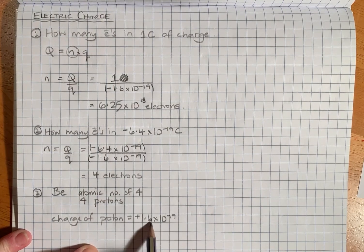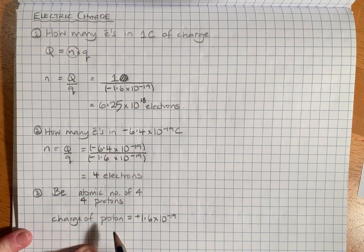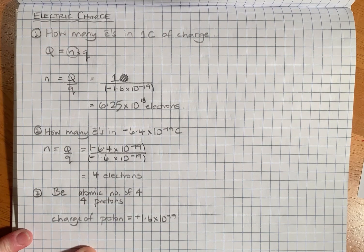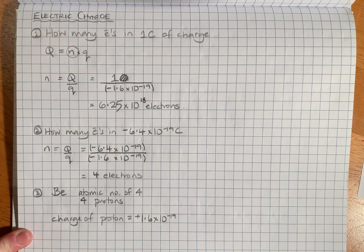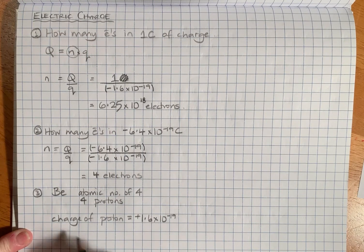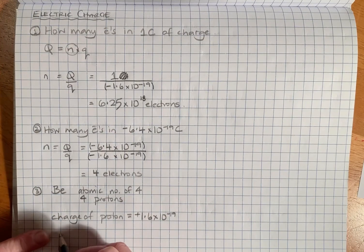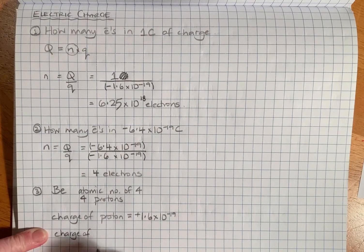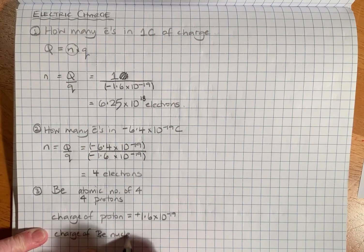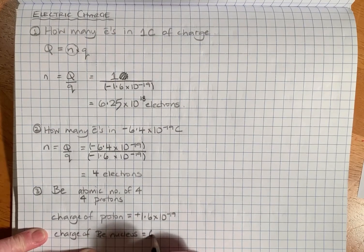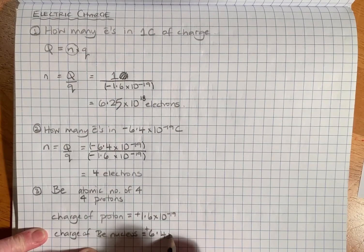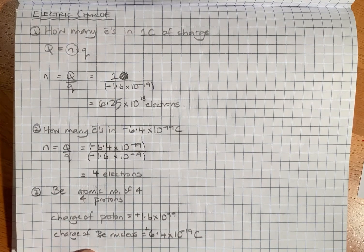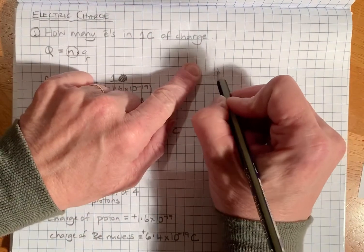The beryllium atom has four protons and the charge of a proton must be +1.6 times 10 to the minus 19. I know that because all atoms are neutral, so an electron and a proton must have equal and opposite charges. That's the charge on a proton, so multiply that by 4 and the charge of the beryllium nucleus must be +6.4 times 10 to the minus 19 coulombs.